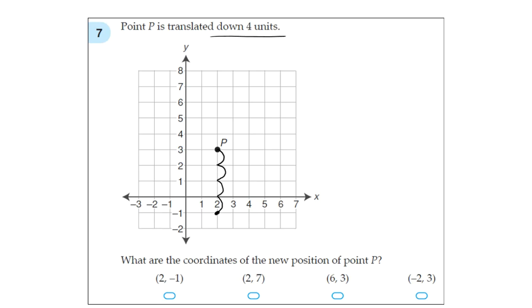1, 2. So it has to start with a 2, so it's either A or B. It's not going to be this and it's not going to be this. And next we have the y-axis, so we go down by 1. So 2, negative 1. This is going to be your answer.